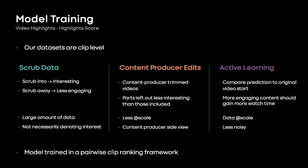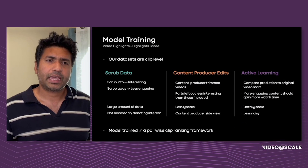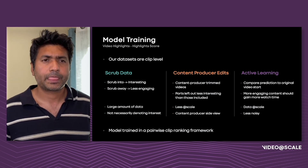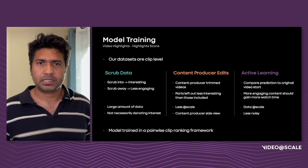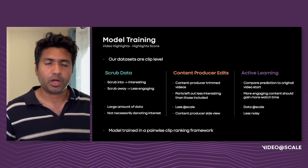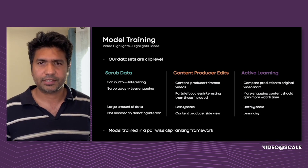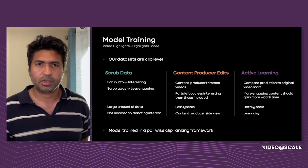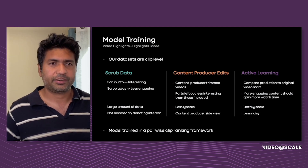We capture data at scale by looking at different signals for videos on Facebook. For example, we could look at scrubbing information — the hypothesis being that at scale, more users probably scrub to an interesting region and away from a less interesting one. This data, however, is quite noisy. We can alternatively collect data from editing workflows that content producers use to trim their content before publishing to Facebook. The hypothesis here is that given a time budget, content producers prioritize retention of important or interesting regions while trimming out less interesting content. This represents a content producer-centric view of what's interesting in a video.